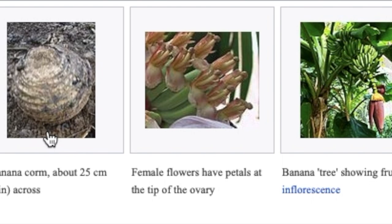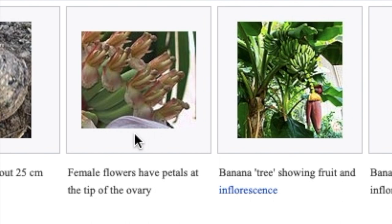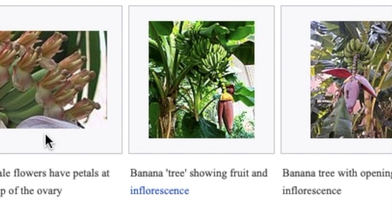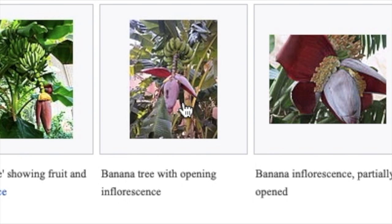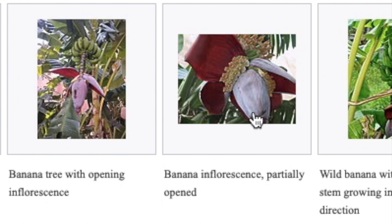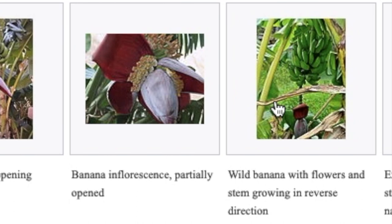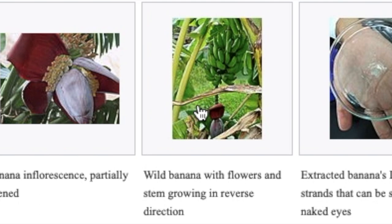The banana's female flowers have petals at the tip of the ovary. Here you have a banana tree showing fruit and inflorescence. Here is a banana tree with opening inflorescence. Here is a banana inflorescence, partially opened. And here is a wild banana with flowers and stem growing in reverse direction. Here you can see extracted banana DNA strands visible with the naked eye.